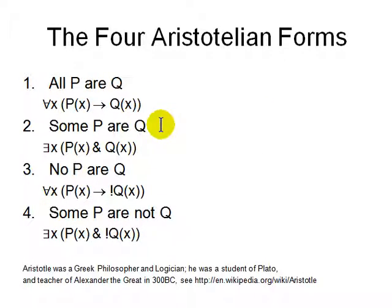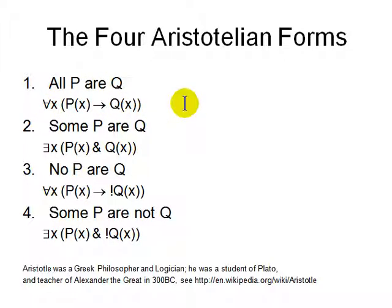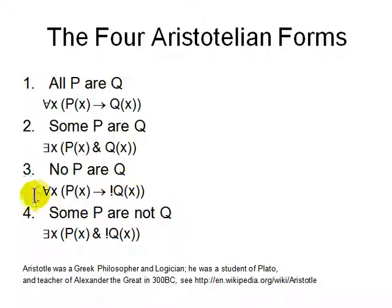There are four Aristotelian forms — from a really old logician from Greek times, a student of Plato and teacher of Alexander the Great, around 300 BC. There are only four different things you can write with 'for all' and 'there exists.' One: All P are Q — write as For all X, Px implies Qx. Two: Some P are Q — write as There exists X such that Px AND Qx. Three: No P are Q — write as For all X, Px implies NOT Qx. Four: Some P are not Q — There exists X such that Px AND NOT Qx.